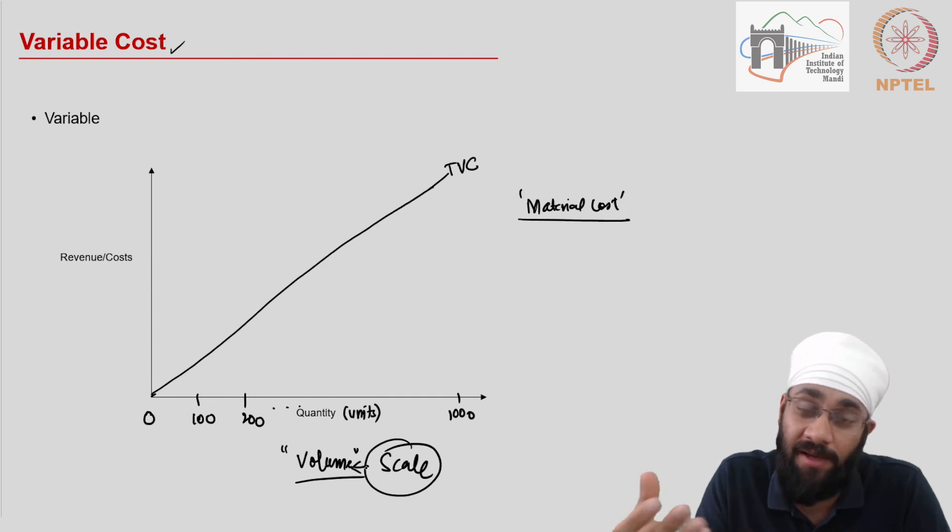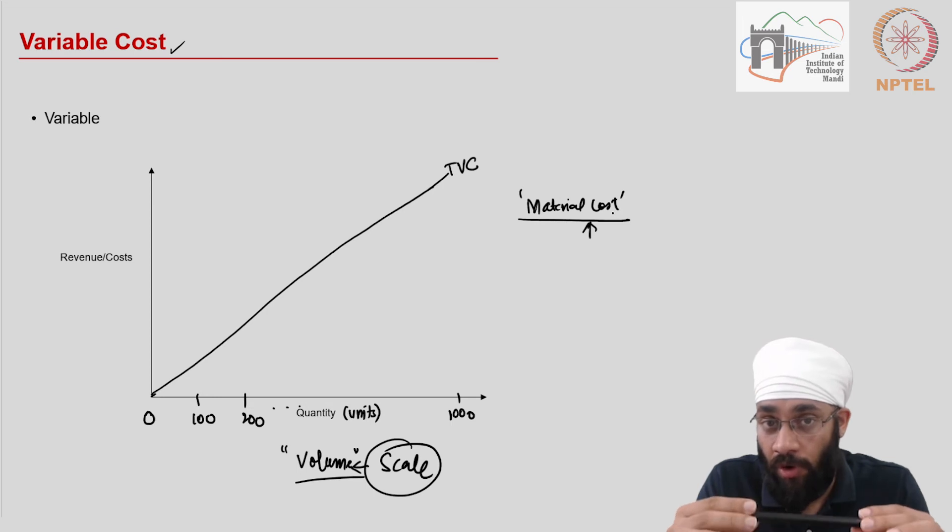The basis is the volume, the quantity of production. Now you could argue that material is not bought per pen - you buy material in bulk and then you store it and you keep using it, yes. But you can directly attribute the cost, you can attribute the specific quantity of material to a given product that is being made - pen in this case.